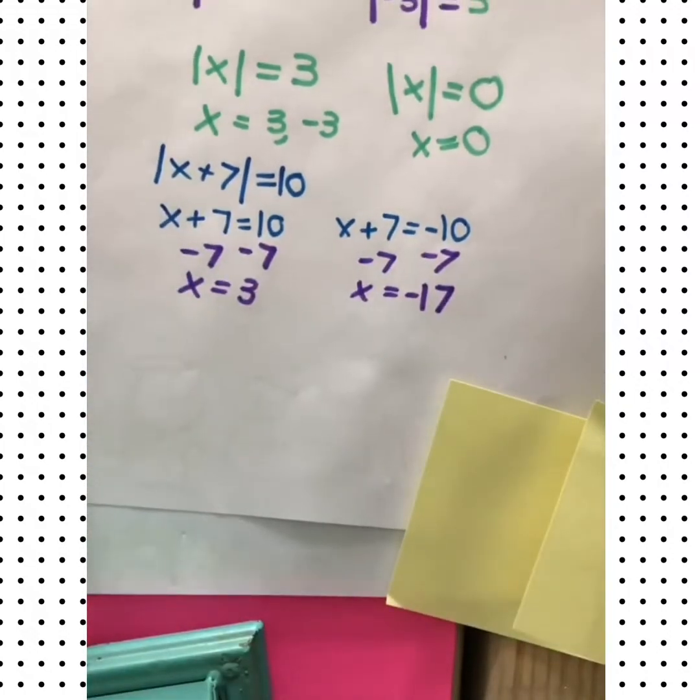So we solve both of them. Now we have our two solutions: x is 3 and x is negative 17. Either of these could be plugged in here and give us an absolute value of 10.